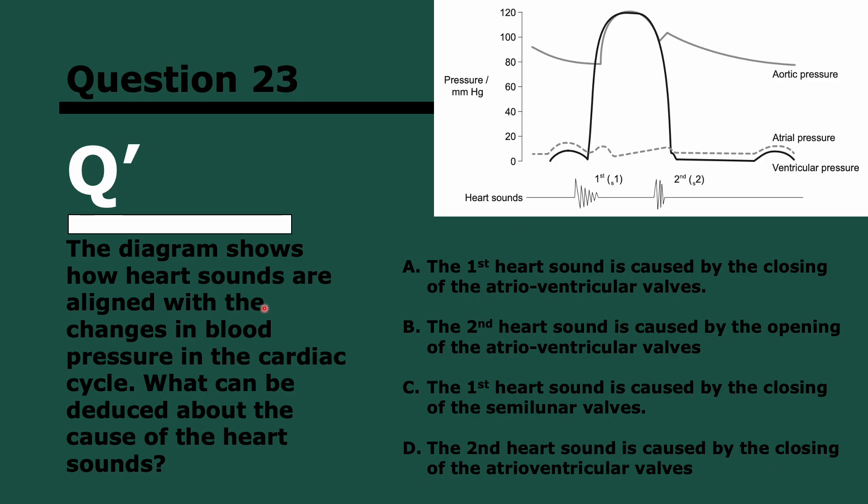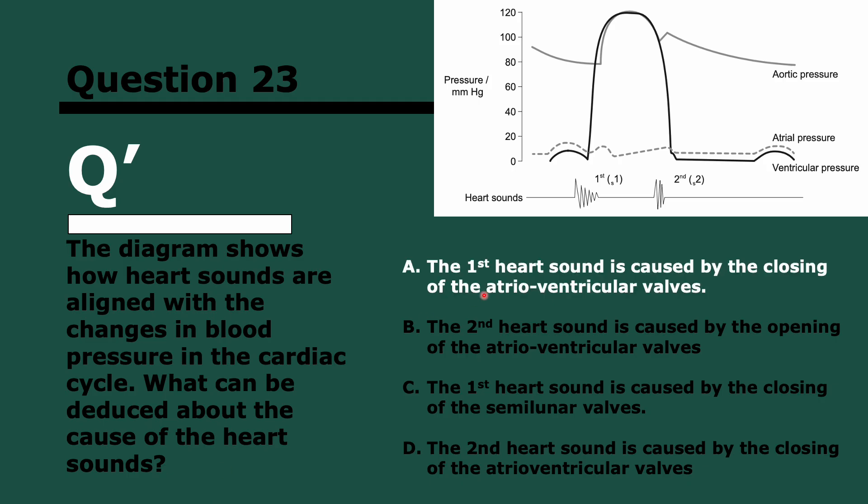Question 23. The diagram shows how heart sounds are aligned with the changes in blood pressure in the cardiac cycle. What can be deduced about the cause of the heart sounds? This can be a little tricky, so think about it. Three, two, and one. It's the closing of the atrioventricular valves. What you see before the sound is blood being pumped from the atrium to the ventricle, so the pressure increases in the ventricle. But then you want to ensure the blood does not flow back to the atrium, so you close the atrioventricular valves, which makes this noise. Afterwards is when you pump the blood into the artery from the ventricle, leading to the huge spike in pressure in the ventricle and in the aorta.